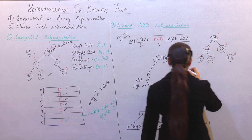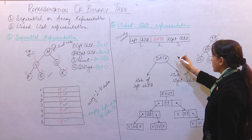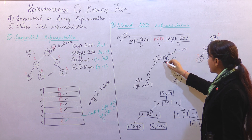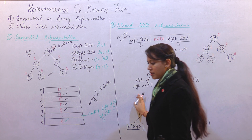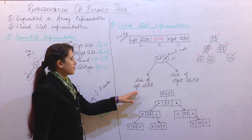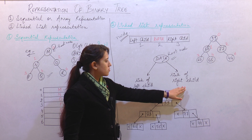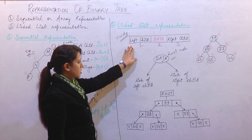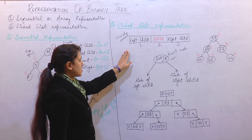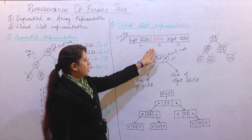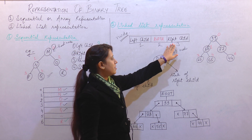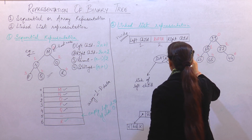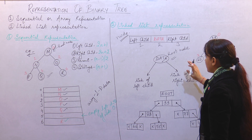We can explain this node using this diagram. The main root node becomes the data in the middle field. On the left side of the data field, we will represent the link of the left child, and on the right side we will represent the link of the right child. So this diagram easily describes the meaning of this node — the left side of data always represents the link of the left child, and the right side always represents the link of the right child.